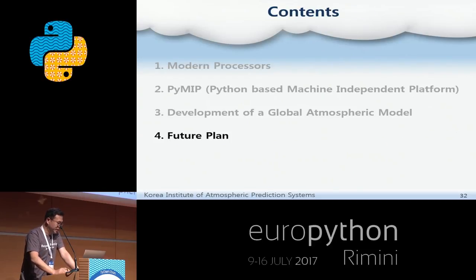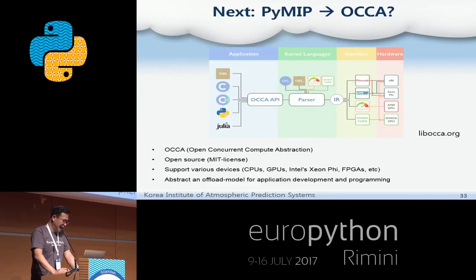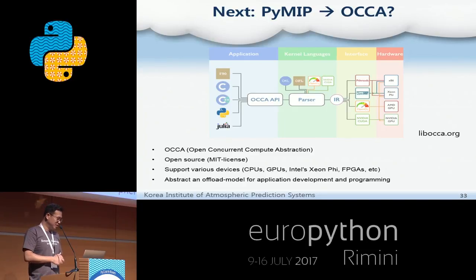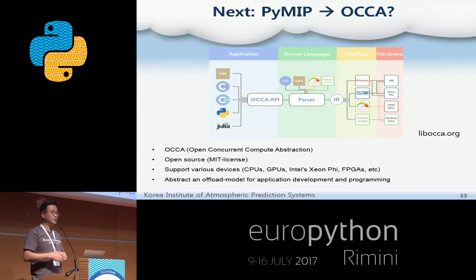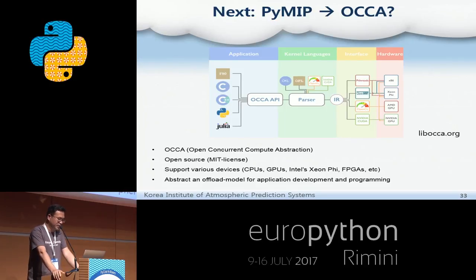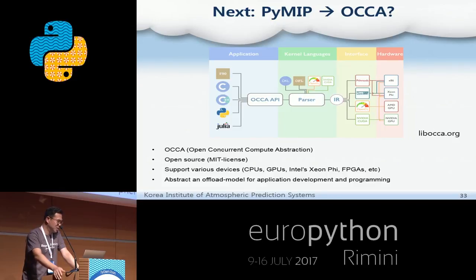I recently found a new project named OCCA, similar to PyMip. While PyMip requires that the main program be written in Python, OCCA allows the main program to also be Fortran, C, C++, and Julia. So if OCCA has more advantages than PyMip, I might change PyMip to OCCA.